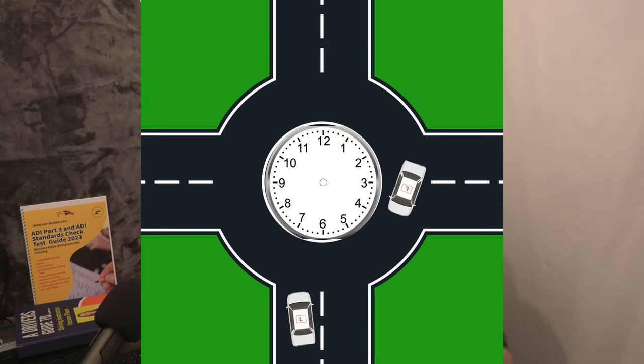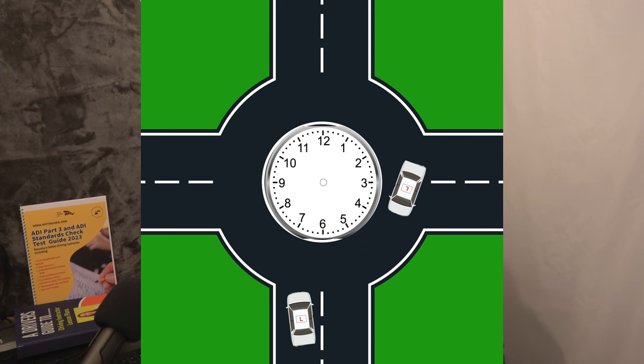For the Part 3 and standards check, can we give them a reference point — a focal point? We generally tend to say: think of the roundabout as a clock. If the car is at or before the three o'clock position, we can go. If the car is after the three o'clock position, we need to give way to it.